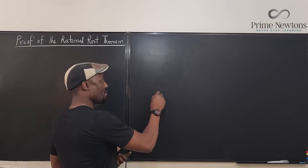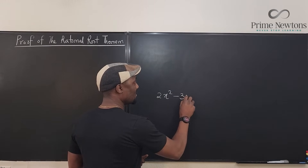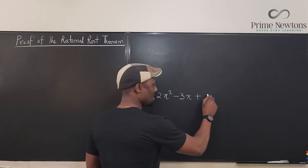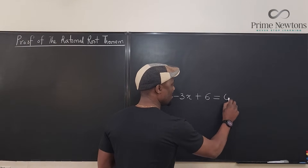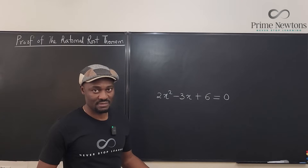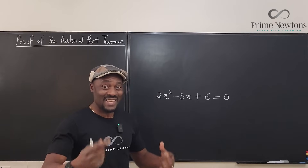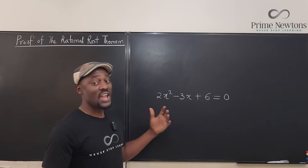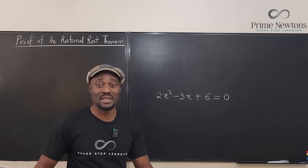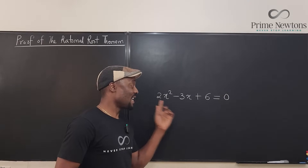Suppose you're given a quadratic equation, say 2x squared minus 3x plus 6, is equal to 0. And you want to see if this can be factored or not. If this can be factored, we say it has rational roots. If it cannot be factored, it does not have rational roots — you'll end up with some weird square roots of something that is not a perfect square, so it is not rational.